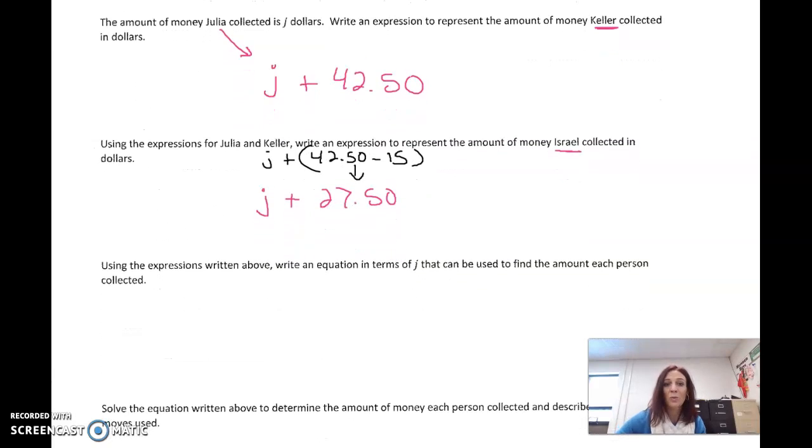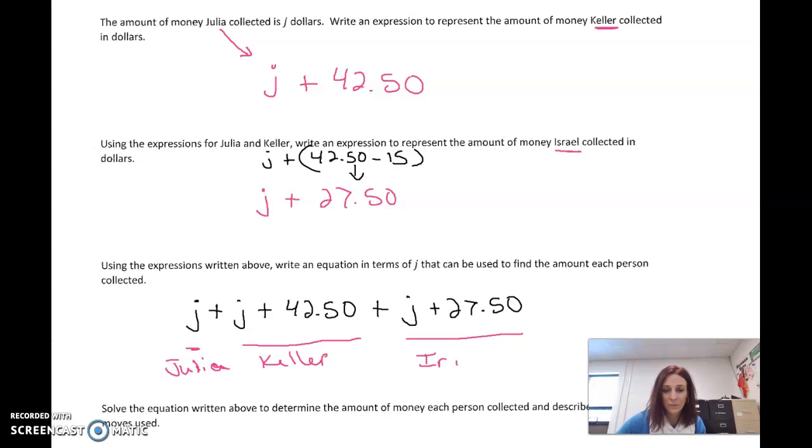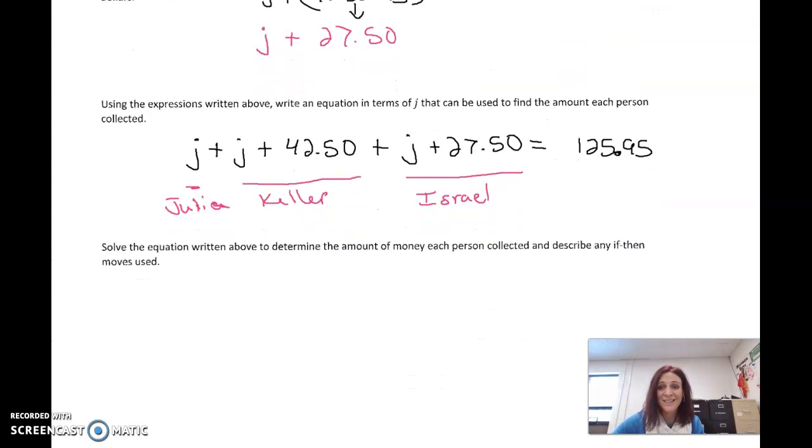Using the expressions above, write an equation. We have Julia, which is J. We have Keller, which is J plus $42.50. And then we have Israel, which is J plus $27.50. Here's Julia, here's Keller, and then here is Israel. Now, to write an equation, what does that equal? It equals their total, and that was $125.95.